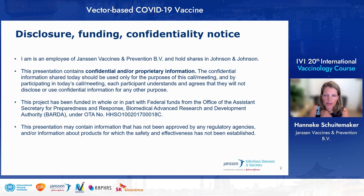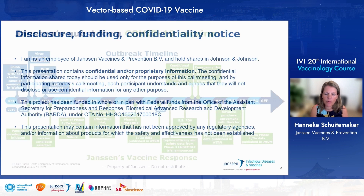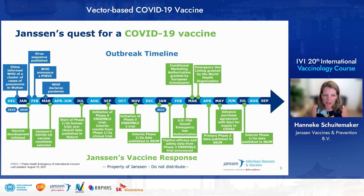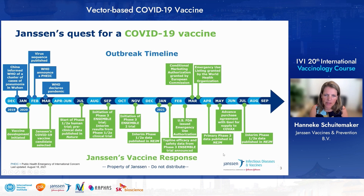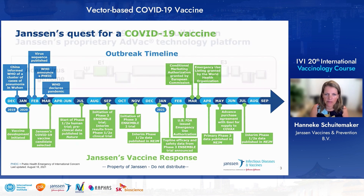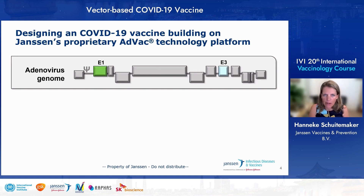From the beginning of last year, like a lot of others, we have been working on the development of the COVID-19 vaccine. This slide captures part of all the activities within Janssen Vaccines, highlighting the path through phase one and three studies to the emergency use authorization, conditional market authorization, and approval by WHO in spring of this year, after which the rollout of our vaccine started.